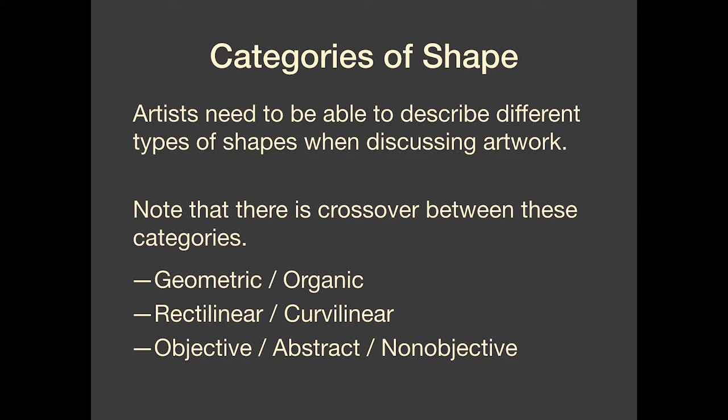You'll see some categories here: geometric, organic, rectilinear, curvilinear, objective, abstract, non-objective. These are all just sorts of groups of different ways of describing shapes. I want to point out right at the start that there is some crossover between these categories. You could have, for example, something that is geometric and curvilinear, or something that is organic and objective. That's totally okay — there is crossover.